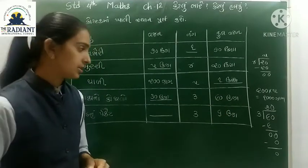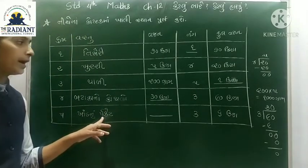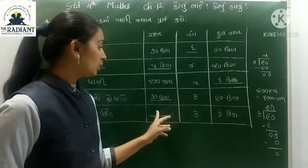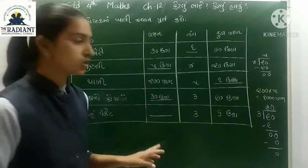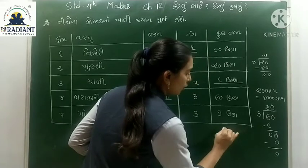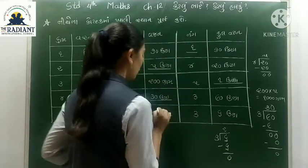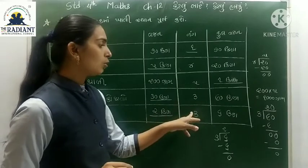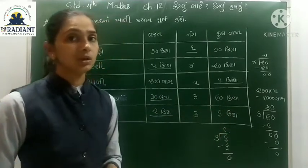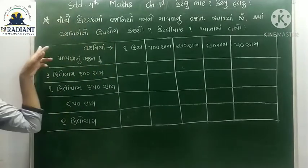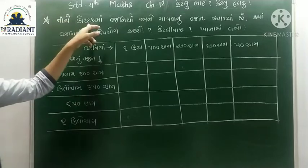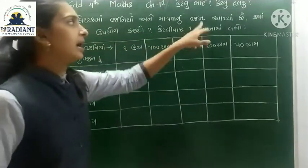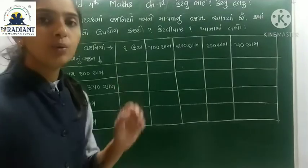ખાંડ નું પેકેટ — 3 ખાંડ ના પેકેટ આવ્યા છે, કુલ વજન 6 કિલોગ્રામ. તો 1 પેકેટ નું વજન 2 કિલોગ્રામ. 2 કિલોગ્રામ નો 1 કોથળો, 3 કોથળા નું કુલ વજન 6 કિલોગ્રામ. આ આગળ ના વિડ્યો માં પણ આપણે શીખ્યા હતા.